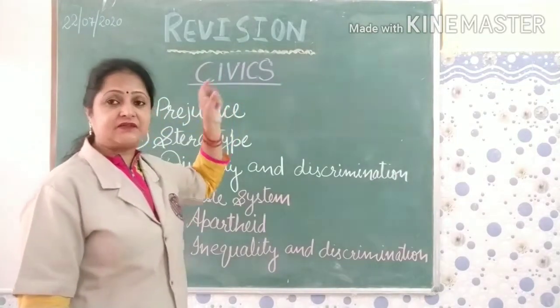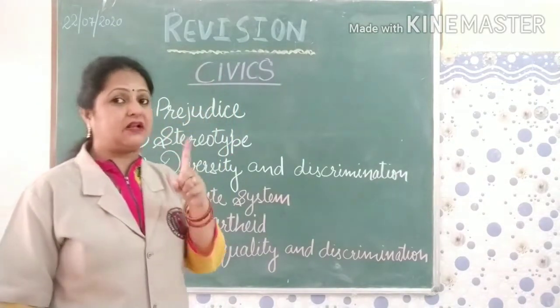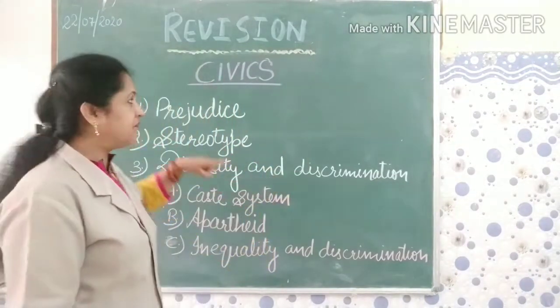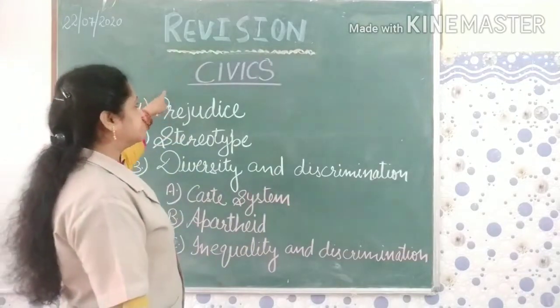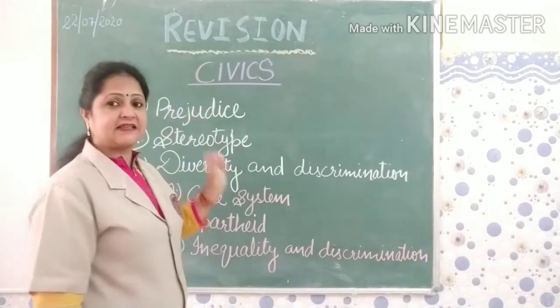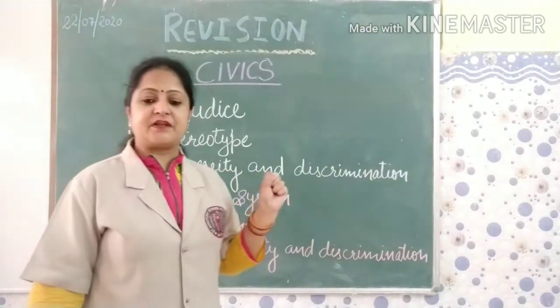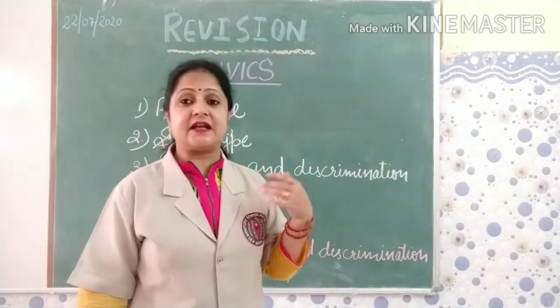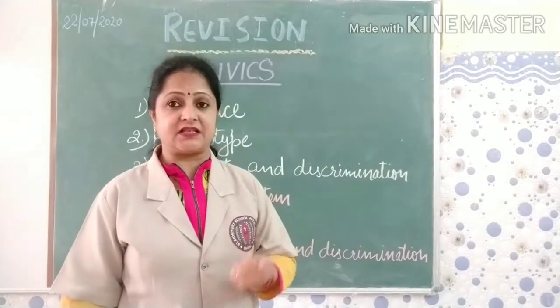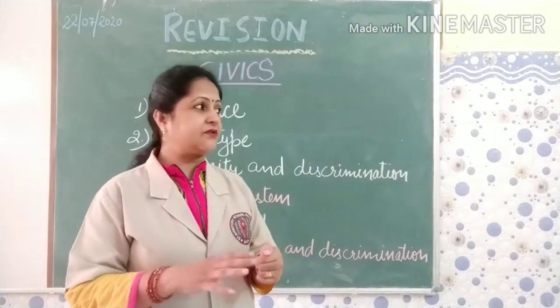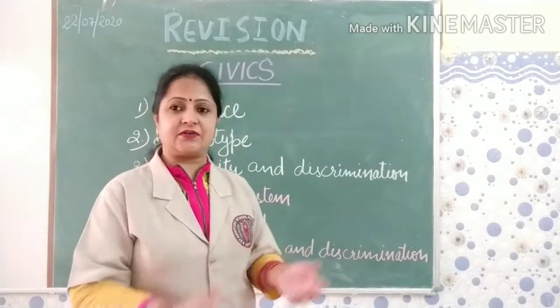As you know, the first chapter will not come in your exam. So we will revise the civics second chapter. The second chapter is 'Prejudice and Discrimination', and this chapter we are going to start today.